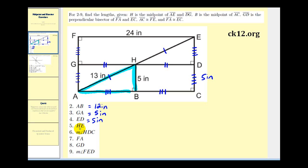Next we want to find the length of HE. HE is this segment here and since H is the midpoint of segment AE and AH is 13 inches, HE must also be 13 inches.